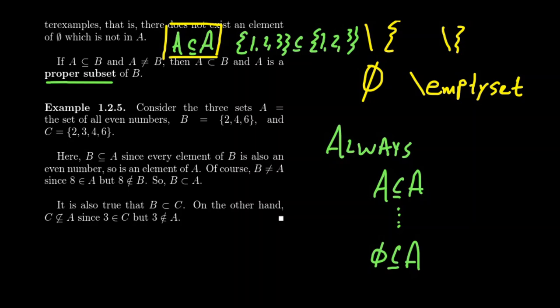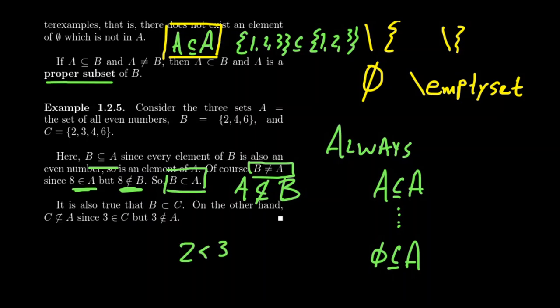So consider the following three sets. Let A be the set of all even numbers, even natural numbers. And so B will be the set {2,4,6}, and then C is the set {2,3,4,6}. Notice that B is a subset of A because 2, 4, and 6 are all even numbers. It's a proper subset because there are certainly even numbers which do not belong to {2,4,6}, like 8 or 0. And so what we often can do is we can denote this using B subset A, but notice there's no equal sign underneath it.